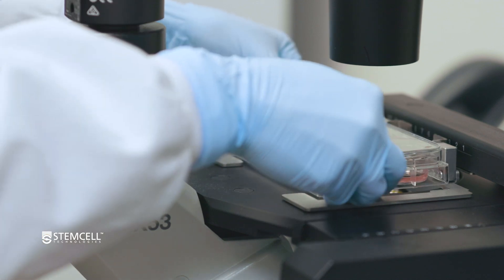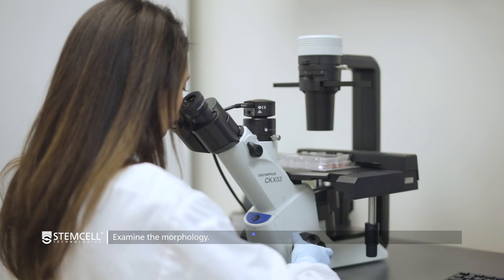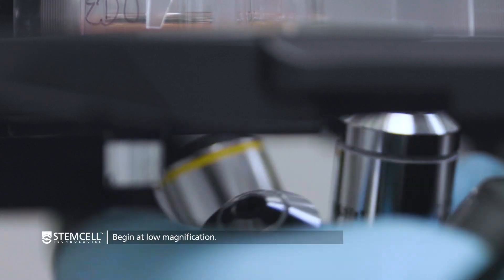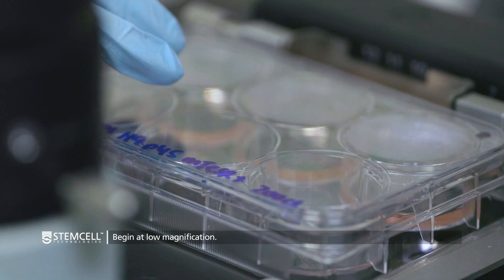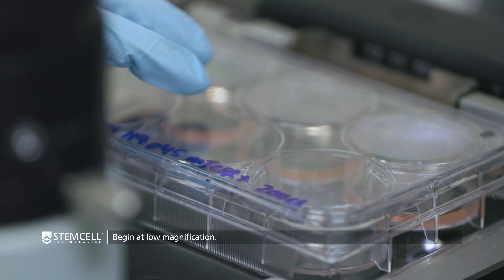Start by examining the morphology of the cultures under the microscope. Using a phase contrast microscope, begin at low magnification and scan the well to assess the quality of the PSC morphology.